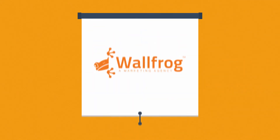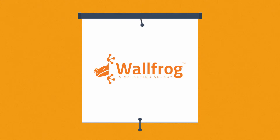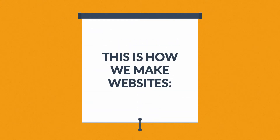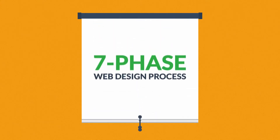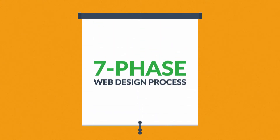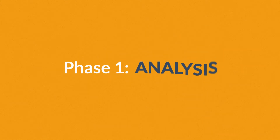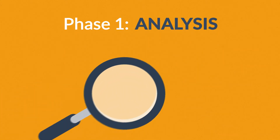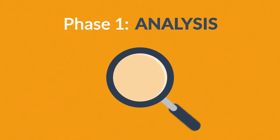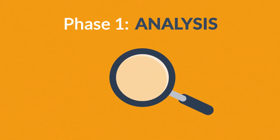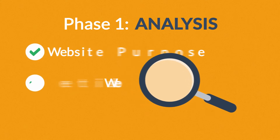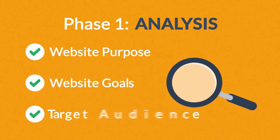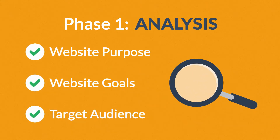That's where we come in. This is how we make websites, by following a seven-phase web design process. Phase 1 — Analysis: the first step is always about information gathering, identifying things like the website purpose, goals, and target audience.